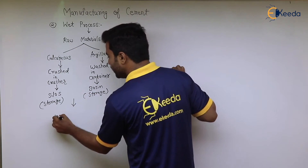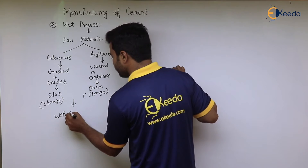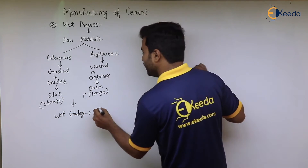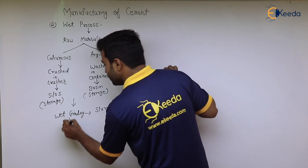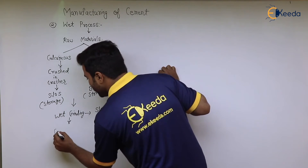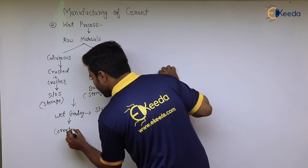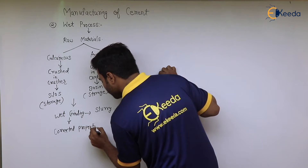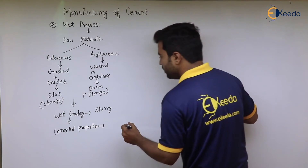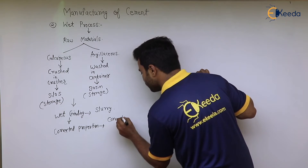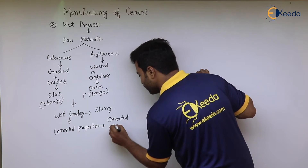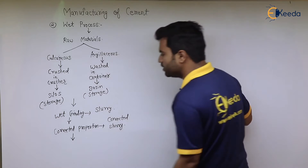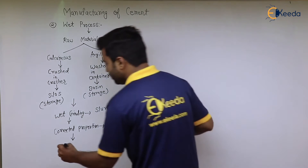Wet grinding is then carried out by addition of water and slurry is formed. The slurry is then taken into corrected proportions and is called corrected slurry.